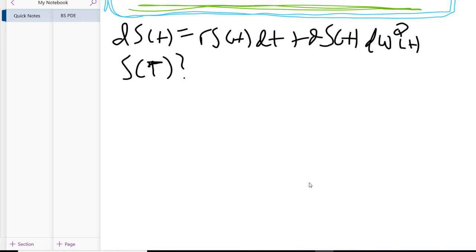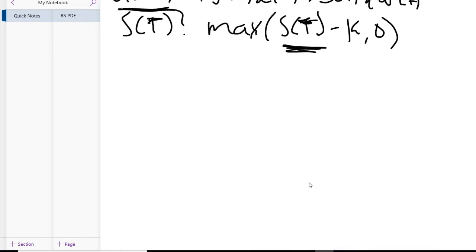What is S at time T? It's important to have this as we start to solve the equation to look at payoff functions. We know that the payoff of a call option is the maximum of the underlying at maturity minus our strike price, or zero.